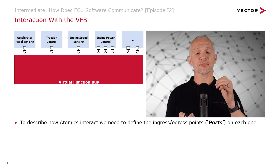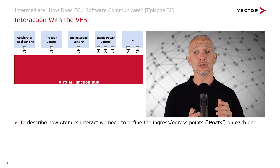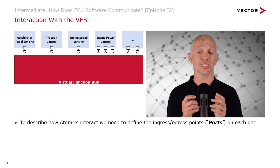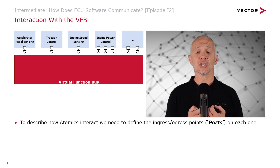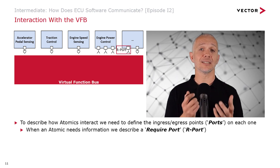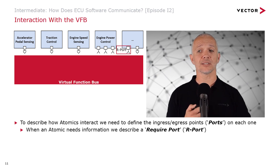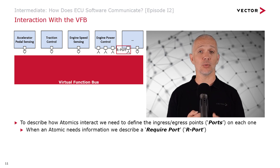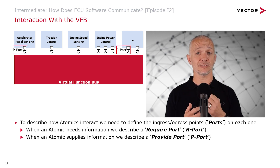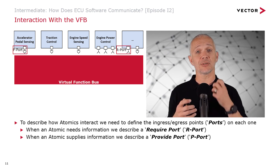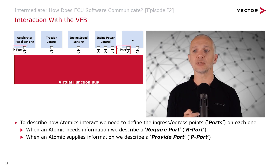To do this, we define the ingress and egress points of information on each atomic. We call these ingress and egress points ports. Where we have a software component that needs information, we describe a require port - that software requires information, it's an R port. When an atomic provides or supplies information, we describe a provide port - that software component is going to provide information, that's a P port.